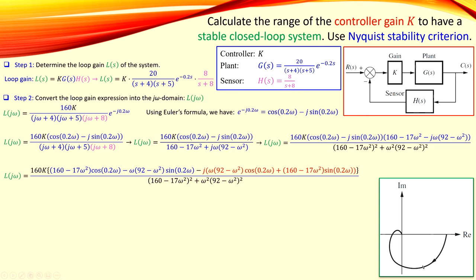The polar plot shows for each point both the magnitude of the loop transfer function and the phase. For the Nyquist stability criterion, we need a phase shift of minus 180 degrees, which corresponds to a specific point on the graph. To have the point with a phase contribution of minus 180 degrees, we need to make the imaginary part of the loop transfer function zero, which gives us the critical frequency.